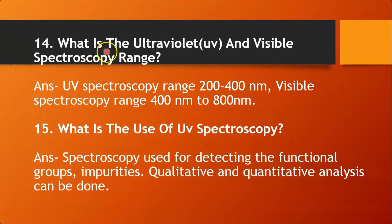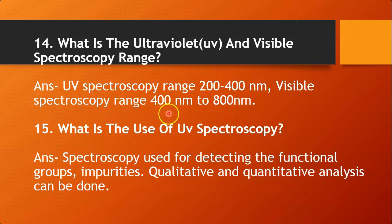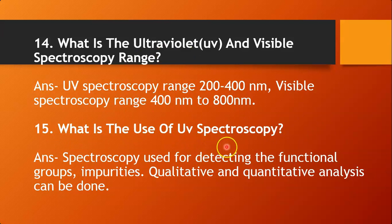The next question: what is the ultraviolet and visible spectroscopy range? The UV spectroscopy range is 200 to 400 nanometers wavelength, and the visible spectroscopy range is about 400 to 800 nanometers. UV spectroscopy is used for detecting functional groups as well as impurities, and both qualitative and quantitative analysis can be done using UV spectroscopy.